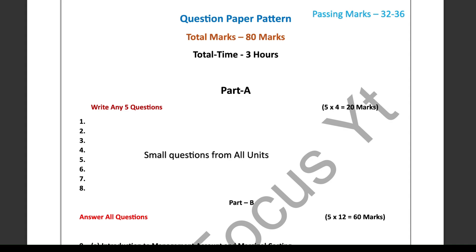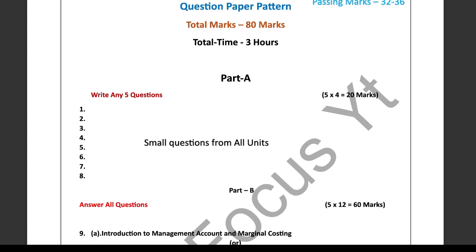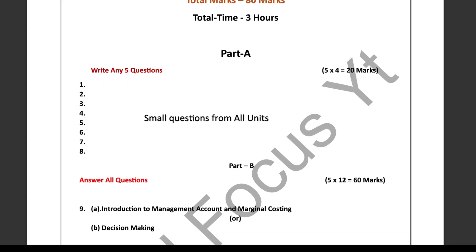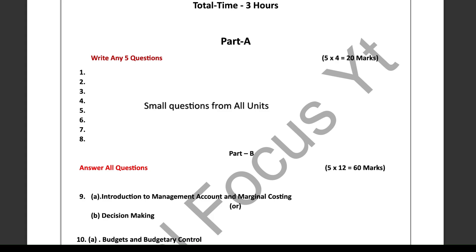Part A consists of eight short answer questions. You need to answer any five out of these eight questions. Each question in Part A carries four marks, making this section worth a total of 20 marks — five questions times four marks equals 20 marks. These short questions will cover topics from all the units in your syllabus, so make sure you have a good understanding of the basics across the board.